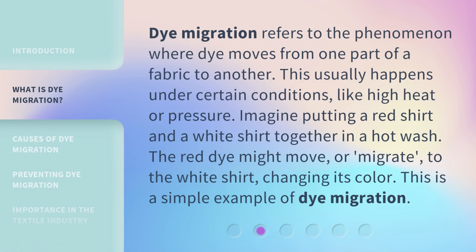Dye migration refers to the phenomenon where dye moves from one part of a fabric to another. This usually happens under certain conditions, like high heat or pressure. Imagine putting a red shirt and a white shirt together in a hot wash. The red dye might move or migrate to the white shirt, changing its color. This is a simple example of dye migration.